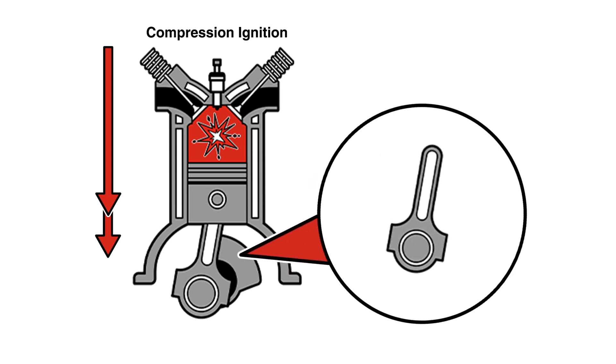This moves the connecting rod and crank, turning the force of the explosion from a linear motion to a rotary motion.